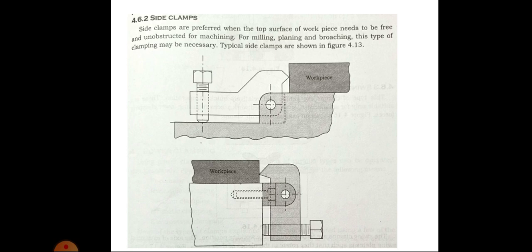In the side jaw clamp shown in the diagram, the clamp slides down as the knurled nut is rotated. Now the jaw is pushed against the workpiece to clamp it firmly.